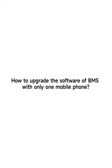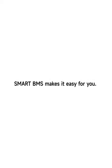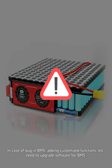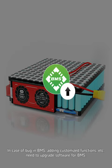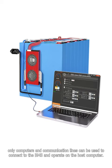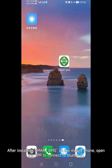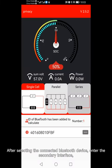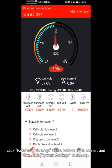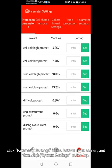How to upgrade the software of BMS with only a mobile phone — Smart BMS makes it easy for you. In cases of bugs in BMS, or when adding customized functions, you need to upgrade the BMS software. In the past, only computers and communication lines could be used. Now we can do it on mobile. After installing Smart BMS, open the app to connect to Bluetooth and select the connected device to enter the secondary interface.